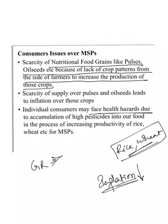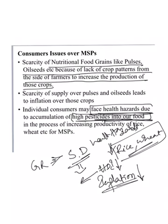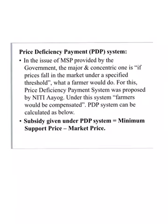Individual consumers may also face health hazards because of accumulation of high pesticides in our food. The Green Revolution is often called development, but it is not sustainable development. Sustainable development must allow future generations to enjoy their own needs. Accumulation of pesticides into our food results in health hazards, reducing the Human Development Index — which is also one of the Sustainable Development Goals.